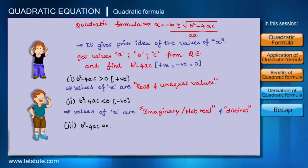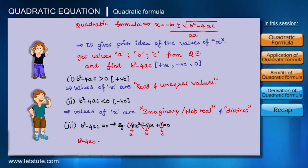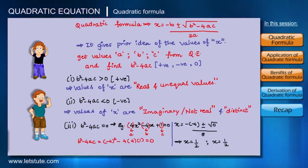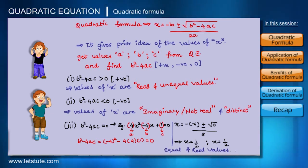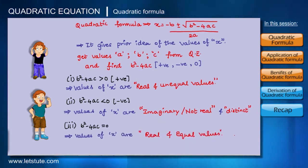Now, if B² minus 4AC equals zero, let's take the example 4X² minus 4X plus 1 equals zero. Here A is 4, B is minus 4, and C is 1. The value of B² minus 4AC comes out to zero. Solving with the quadratic formula, we get X equals one-half, twice — meaning both values of X are the same and they are real values.